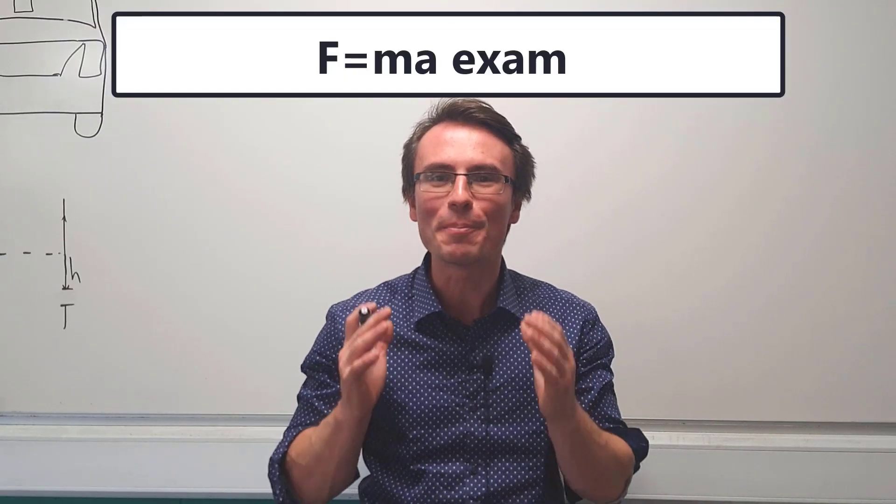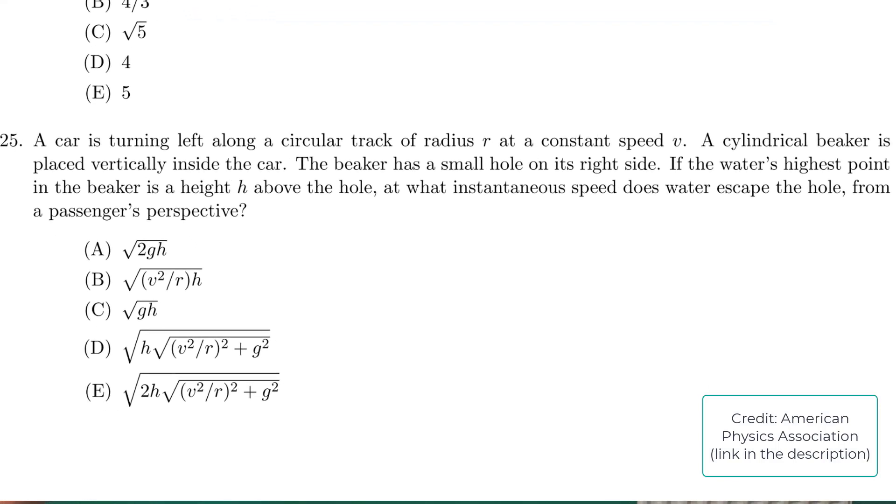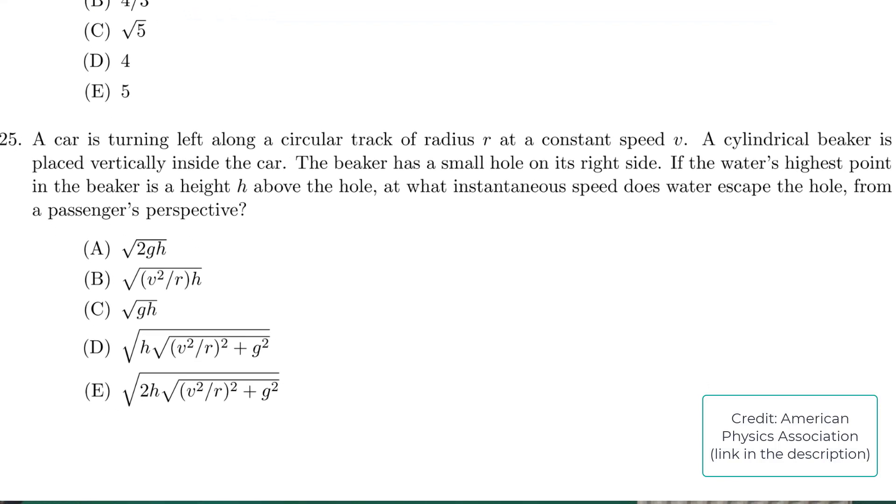Let's solve a really interesting problem from the American F equals MA exam. We have a car that is turning left along a circular track of radius R at a constant speed V.